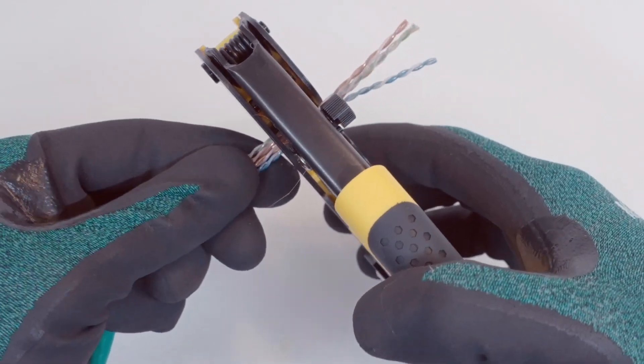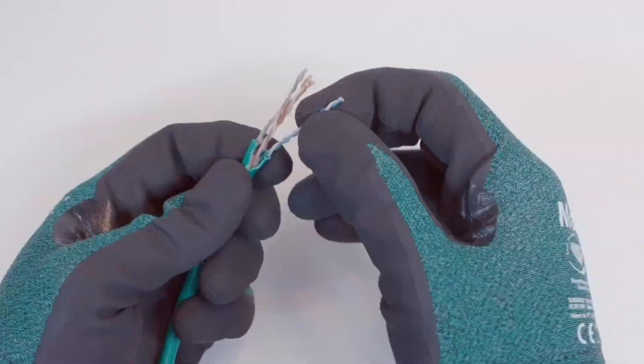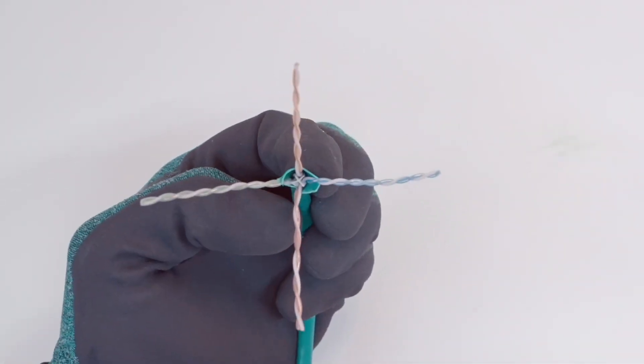If necessary, the wires can now be cut back down to about half a finger's worth in length. Separate each of the four pairs of wires. Orange and brown should be opposite each other.